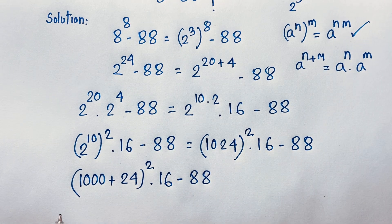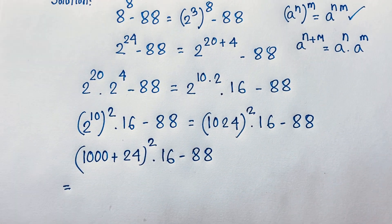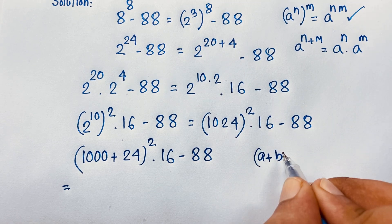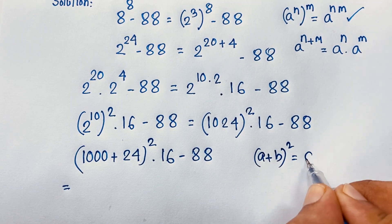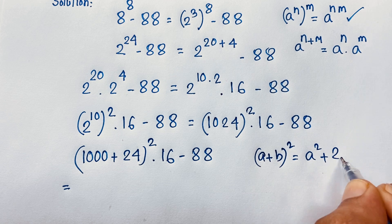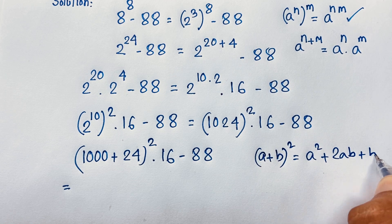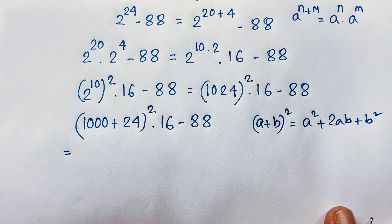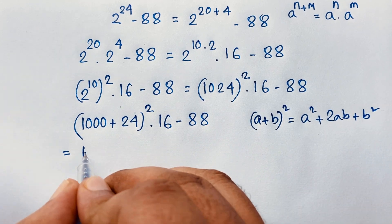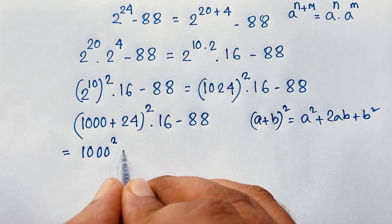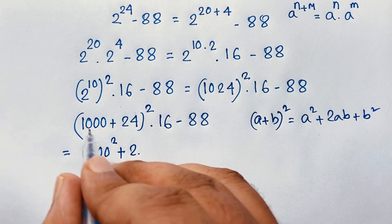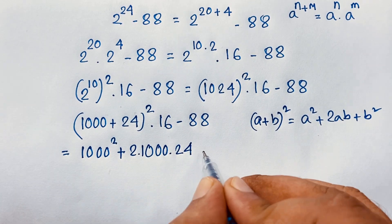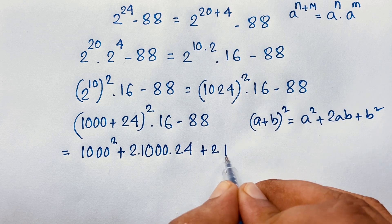Now here a plus b whole square — so you know that a plus b whole to the power 2 it will be a squared plus 2ab plus b squared. If I apply this formula here, then it will be a squared plus 2ab, where a is 1000 and b is 24, plus b squared, I mean 24 to the power 2.